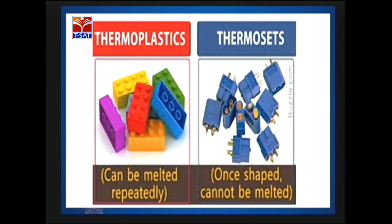There are two types of plastic. One is thermoplastic and the other is thermosetting plastic. Thermoplastics are plastics which deform easily on heating. Thermosetting plastics are plastics which are molded once and cannot be softened on heating. These plastics are used a lot nowadays.